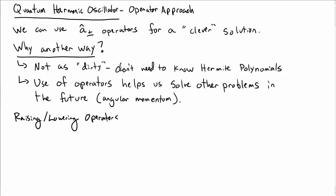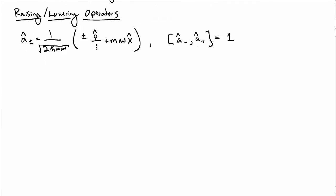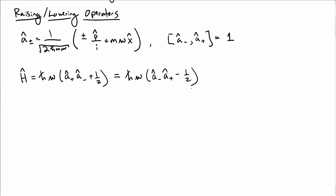Let's go back to summarize what we learned about raising and lowering operators. â̂₊ or â̂₋ is 1 over the square root of 2ℏmω, times p̂ over i plus or minus mωx̂. These raising and lowering operators don't commute — in particular, their commutation relation is just equal to 1. Also recall that the Hamiltonian for the harmonic oscillator can be written as ℏω(â₊â₋ + 1/2), or switching the order, ℏω(â₋â₊ − 1/2).